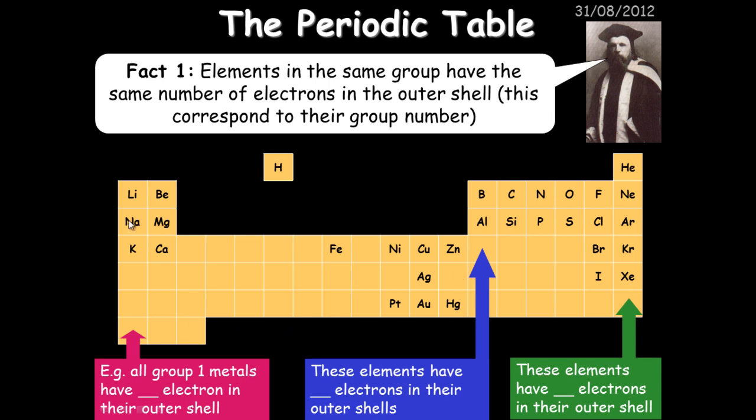But looking at the groups, we can tell if it's specifically in group one, we can tell how many electrons it has in its outer shell. So for example, if it's in group one, it has one electron in its outer shell. If it's group two, two electrons. If it's group three, three. If it's group four, four and so on. The group on the end here, group eight, has a full outer shell and it has eight electrons in its outer shell.